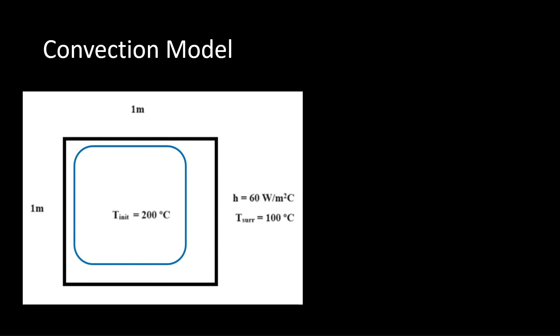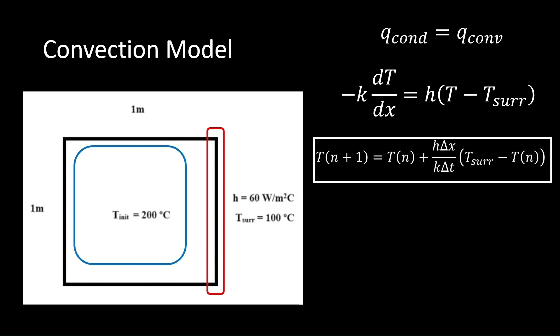Inside the plate, we will use the FTCS method to model conduction as before. On the edges of the plate, we are interacting with fluid. Thus, to derive a numerical solution, we start with the boundary conditions. We find that the convective and conductive heat flux at the outer edges should be equal. This is done by plugging in Fourier's law of heat conduction on the left and Newton's law of cooling on the right. When we plug in the finite difference equation for the first derivative, we get the following expression.